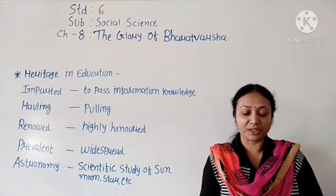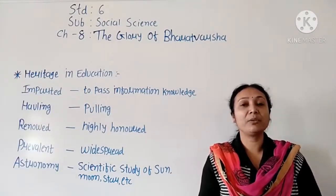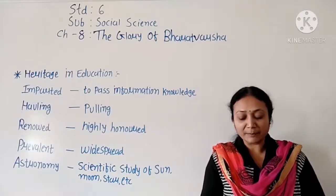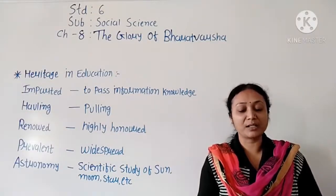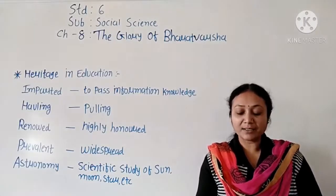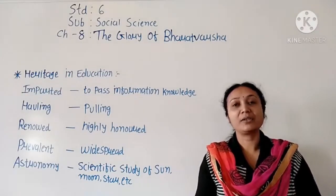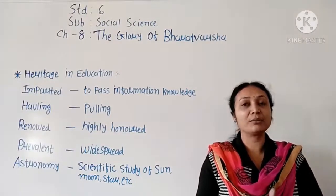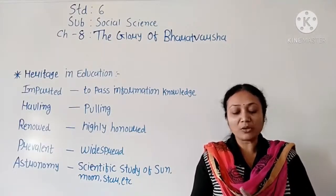Remains of educational institutions have been found from Mohenjo-daro. From Mohenjo-daro we can say that there was a very good and high educational institution. Mohenjo-daro means Harappan civilization. This civilization is also called the bronze civilization because they had knowledge about bronze technology.